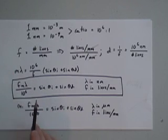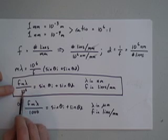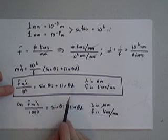If you move the algebraic terms to one side, then it looks a little cleaner: f m lambda over a million equals sine theta i plus sine theta d, and this equation does work.